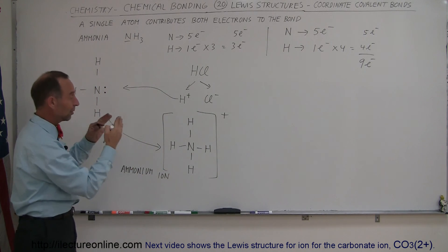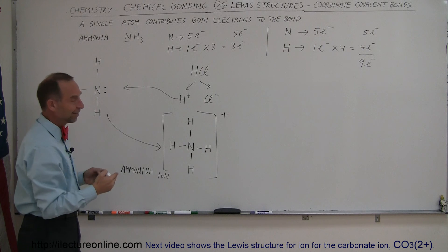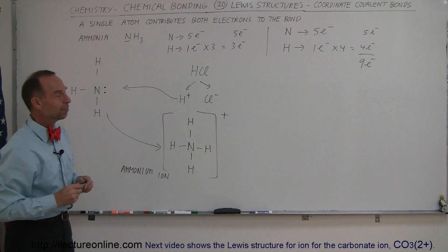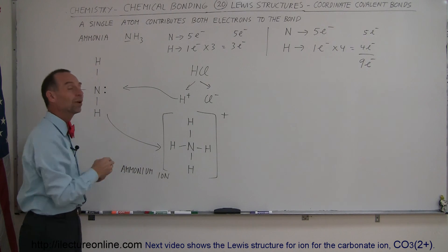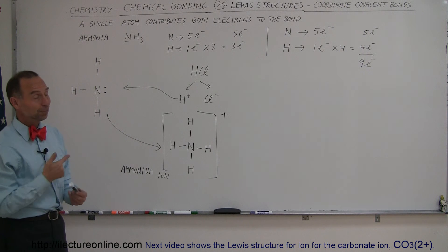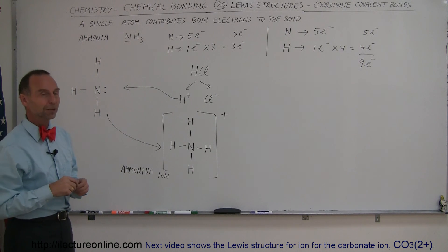Now, of course, once the ion is made, it's impossible to figure out which of the four hydrogens made the coordinate covalent bond. We just know that at least one of them had to be that, otherwise you couldn't have the ion. There you go, the Lewis structure involving a coordinate covalent bond. Thank you.